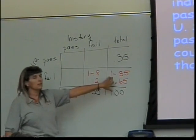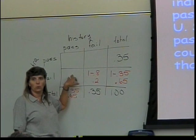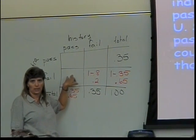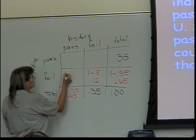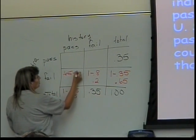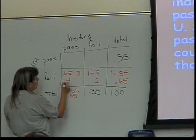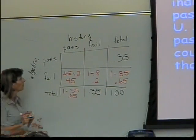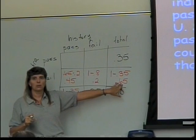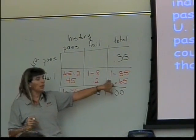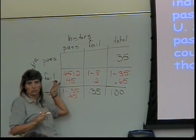So, this plus that has to add up to this. So, I can calculate what goes in this square. That would be 0.65 minus 0.2, which comes out to be 0.45. Because this and that have to add up to 0.65, so that means the rest of it is here.